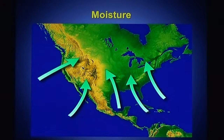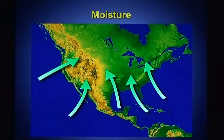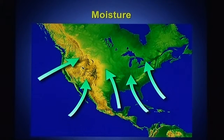The number one source of moisture into North Dakota in the summertime is the Gulf of Mexico. Moisture from the Gulf of Mexico comes up ahead of cold fronts into North Dakota. Another source of moisture you may not think of is crops. Crops take a lot of water out of the ground and put that water into the atmosphere — that's called transpiration.